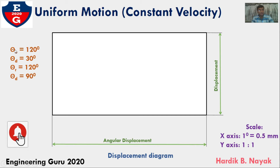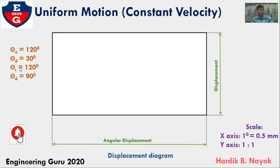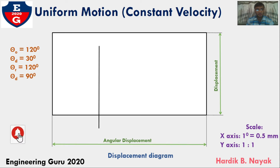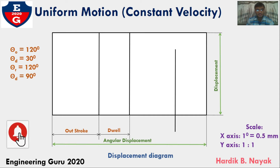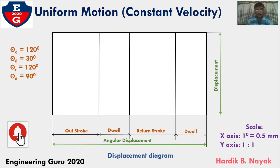I am taking theta O values: the outstroke is 60 mm, then the second dwell is 15 mm, third that is return stroke equals 60 mm, and the final dwell is 45 mm from the x-axis scale.